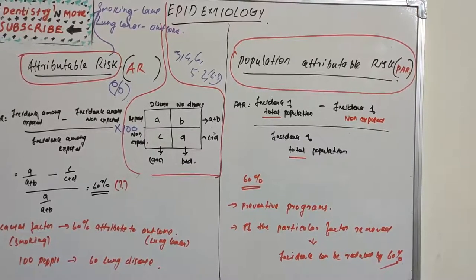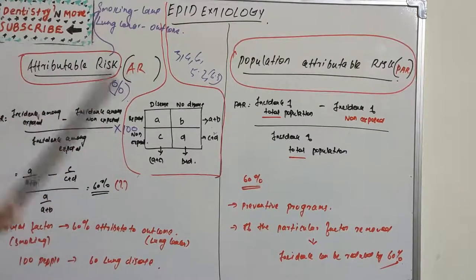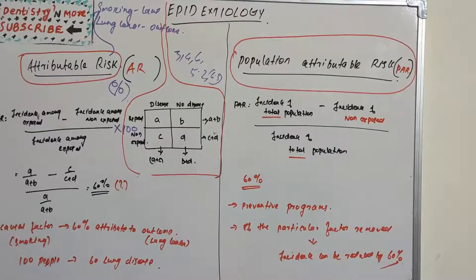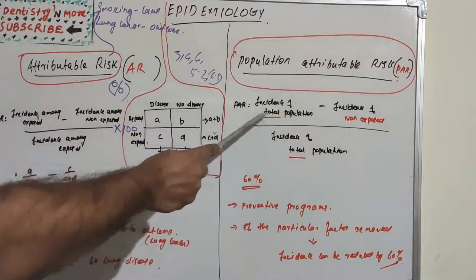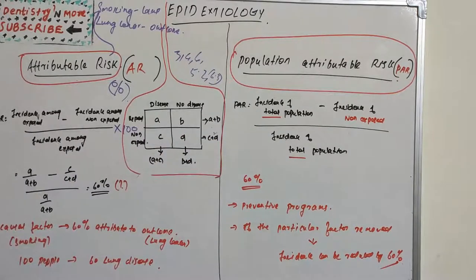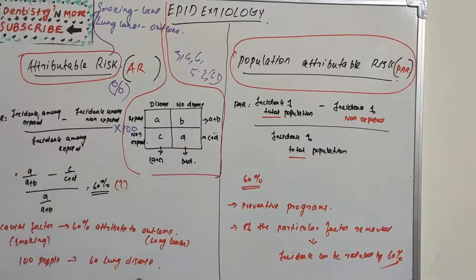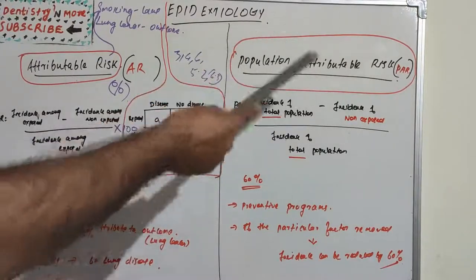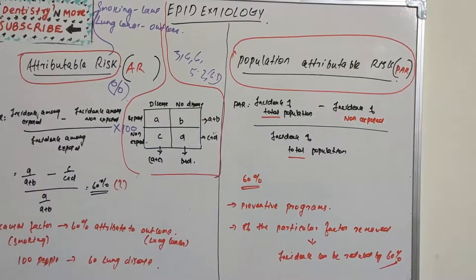Population attributable risk is a related but different concept applied to an entire population. Its formula is: incidence of the total population minus incidence of the non-exposed group, divided by incidence of the total population. Here, we include all lung cancer patients across all causal factors — not just smoking — since lung cancer can result from many causes.